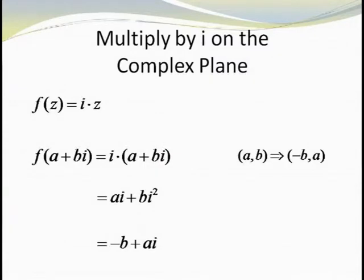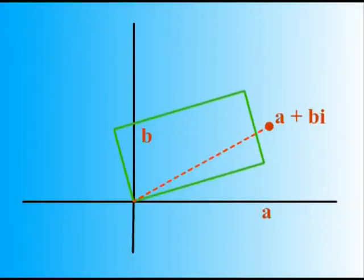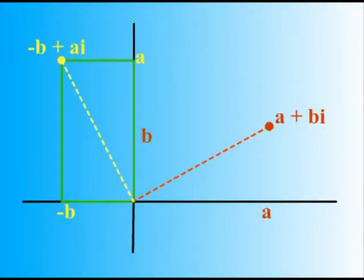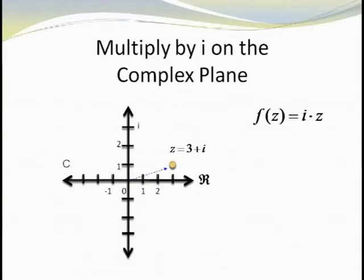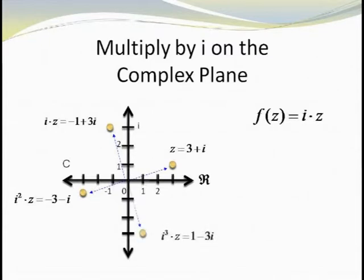Another operation with a good geometric interpretation is multiplication by i. If we start with z equals a plus bi, then i times (a plus bi) will give us minus b plus ai. So our old point (a, b) changes to the new ordered pair (−b, a). This new point corresponds to a 90-degree rotation counterclockwise around the origin. Consider z equals 3 plus i. Then i times z is going to equal negative 1 plus 3i. Multiply by i again, then we get minus 3 minus i. Once more yields 1 minus 3i.